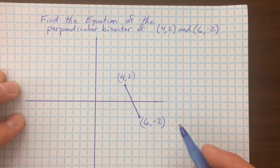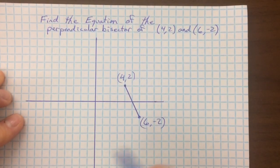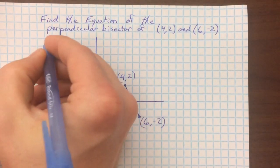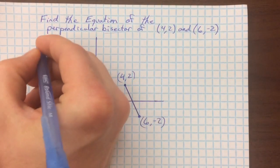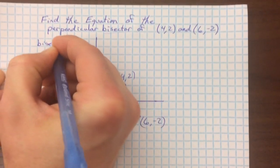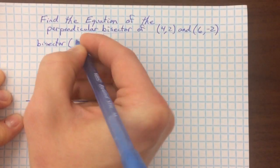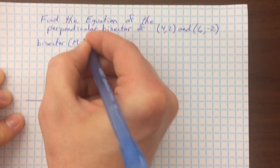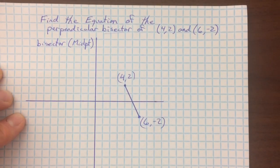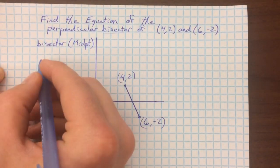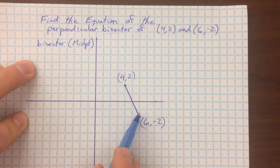First, we've got a couple options, but I like to find the bisector part of it first. In order to find the bisector, I'm finding the midpoint. The midpoint is the average x and the average y.